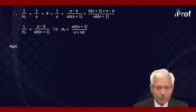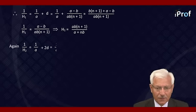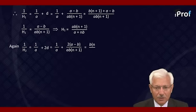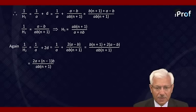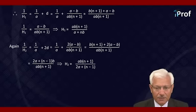Similarly, one upon H2 becomes the third term of the arithmetic progression, that is one upon A plus 2D. This gives one upon A plus 2 times A minus B upon AB(n+1), which equals B(n+1) plus 2(A minus B) divided by AB(n+1), equal to 2A plus (n−1)B upon AB(n+1). Therefore, H2 equals AB(n+1) divided by 2A plus (n−1)B.